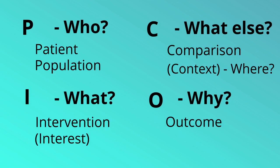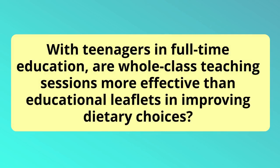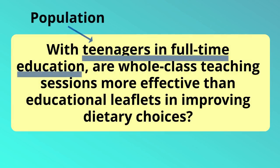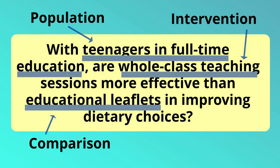Let's take a quick look at an example. With teenagers in full-time education, are whole-class teaching sessions more effective than educational leaflets in improving dietary choices? In this case, P is the population, teenagers in full-time education. I is the intervention, whole-class teaching sessions. C is the comparison, educational leaflets. And O is the outcome, improved dietary choice.